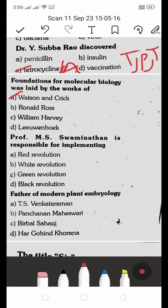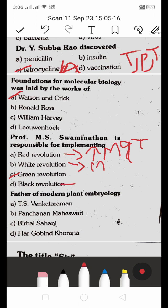The green revolution was implemented by Professor M.S. Swaminathan. Red revolution refers to an increase in meat production and tomatoes. White revolution refers to an increase in milk production. Black revolution refers to an increase in petroleum production.